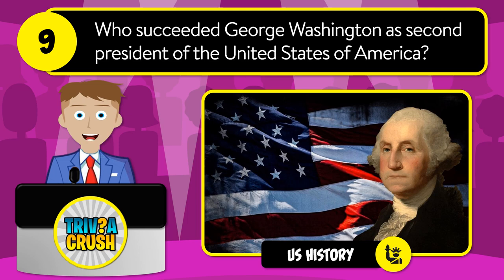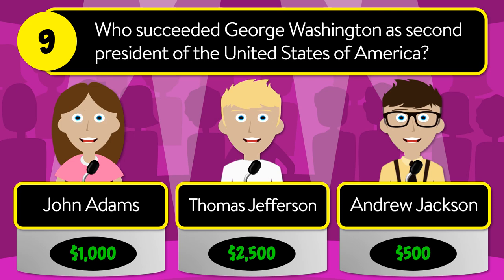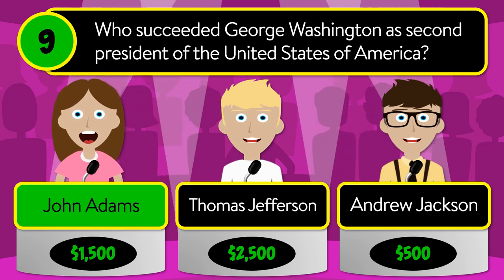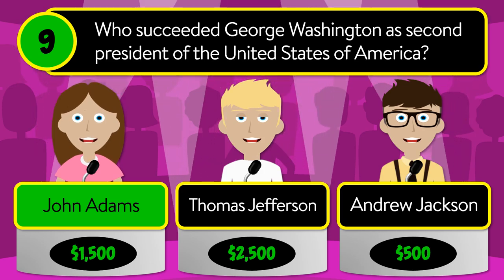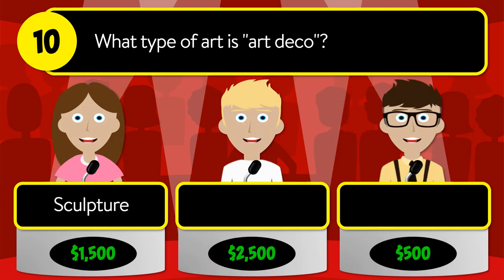Question number nine: who succeeded George Washington as second president of the United States of America? Was it John Adams, Thomas Jefferson, or Andrew Jackson? The correct answer is John Adams.